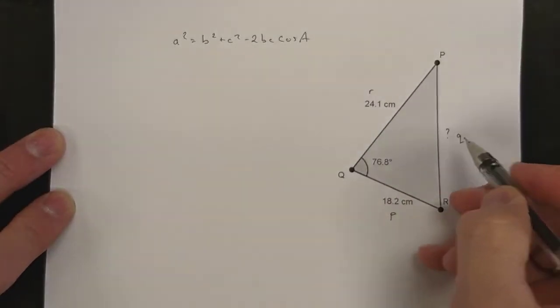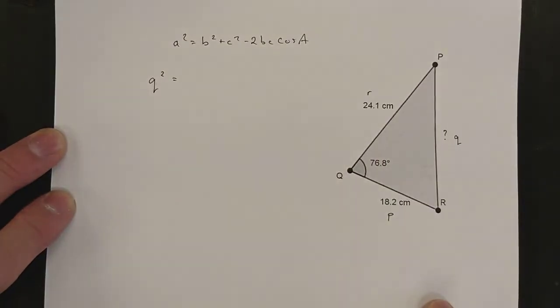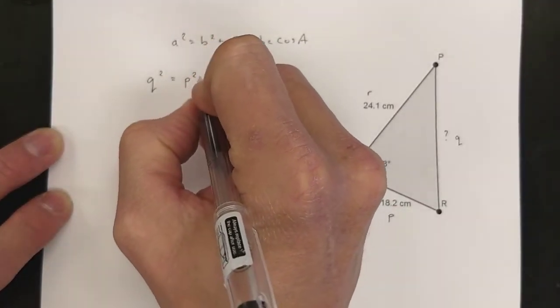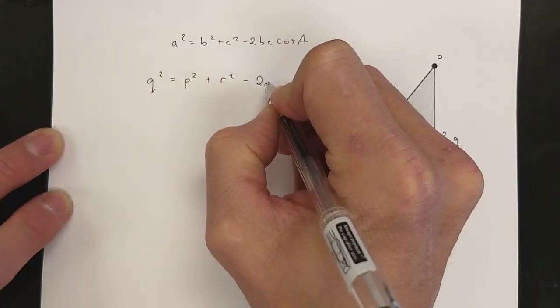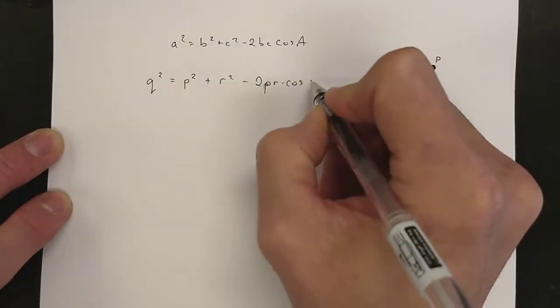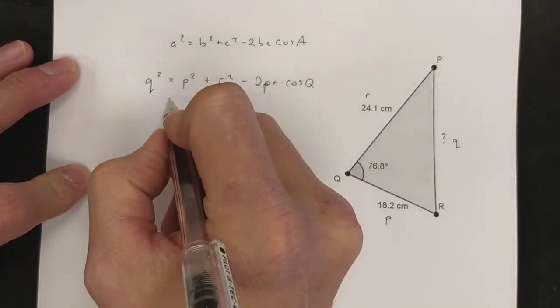We're finding q and we know capital Q. So q squared equals the other two sides, p squared and r squared, minus 2 times the other sides, p and r, times cos of the opposite angle from the side we're trying to find, cos Q. I think we have all of that information.